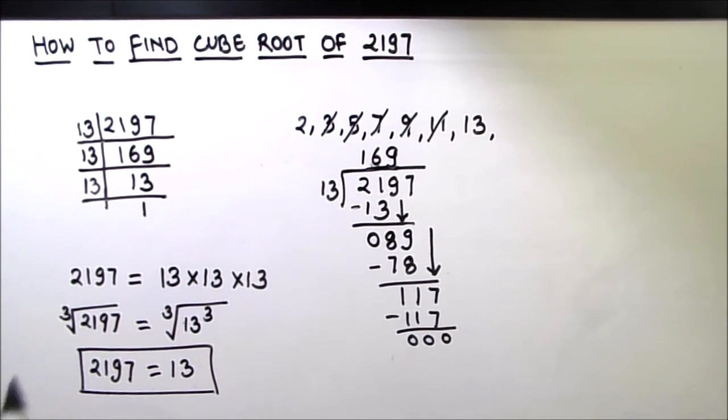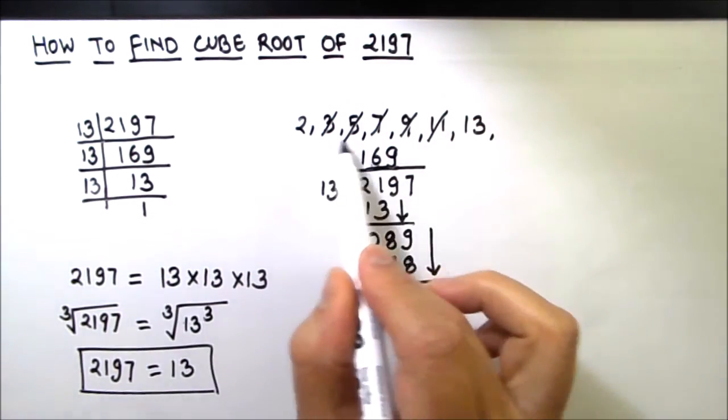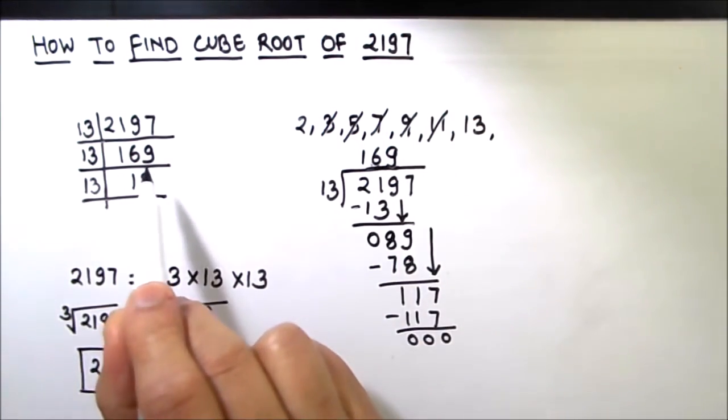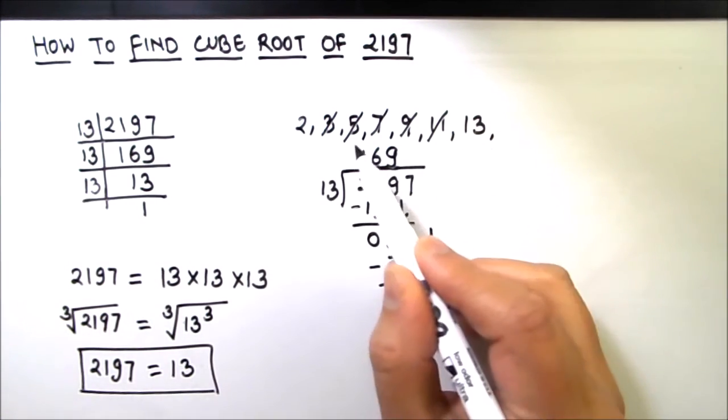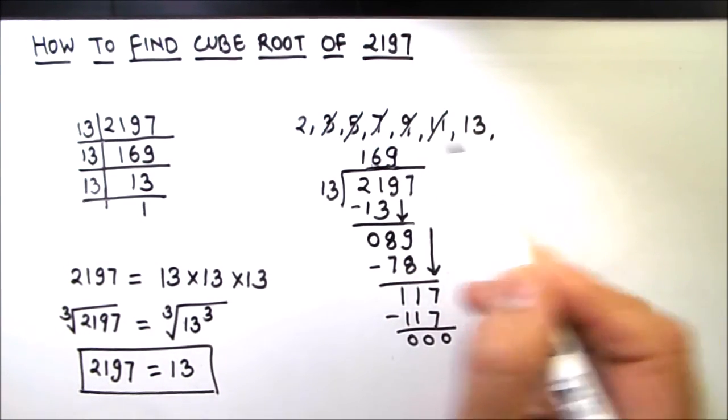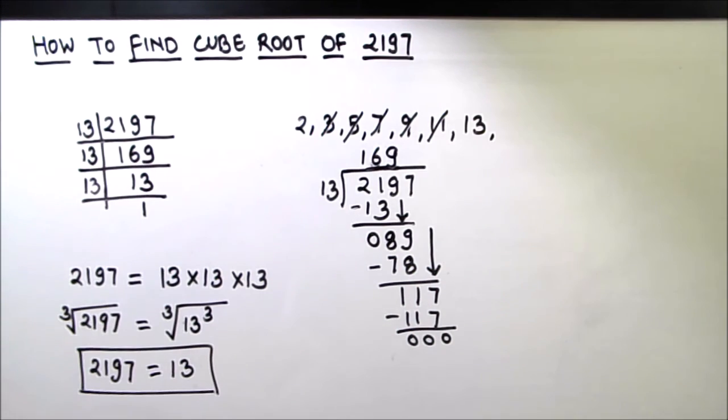I would like to tell you a trick here: for finding the cube root where you are not getting the first four prime numbers as the factors, you should always make a practice of writing the prime numbers like this and then checking one by one whether it is a factor of the number or not. This will help you to get the factor easily.